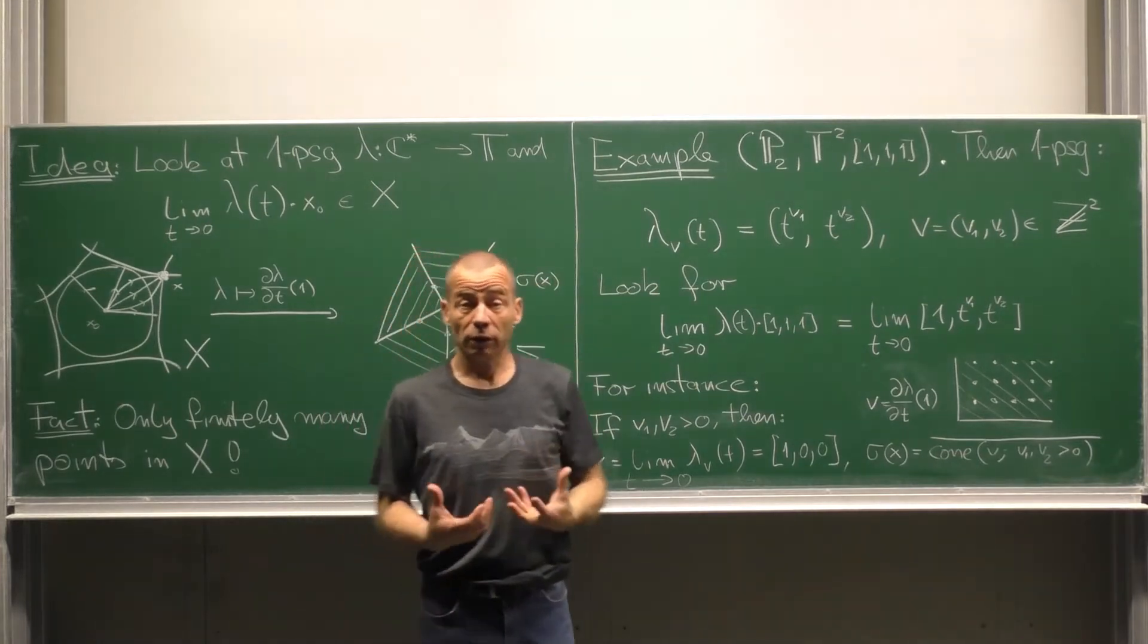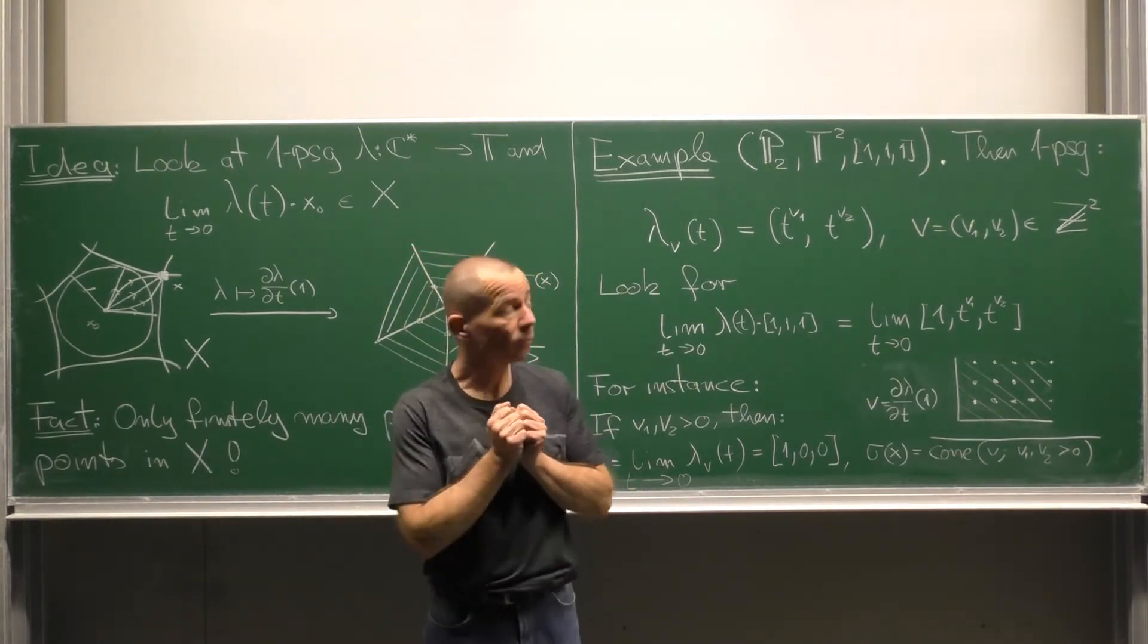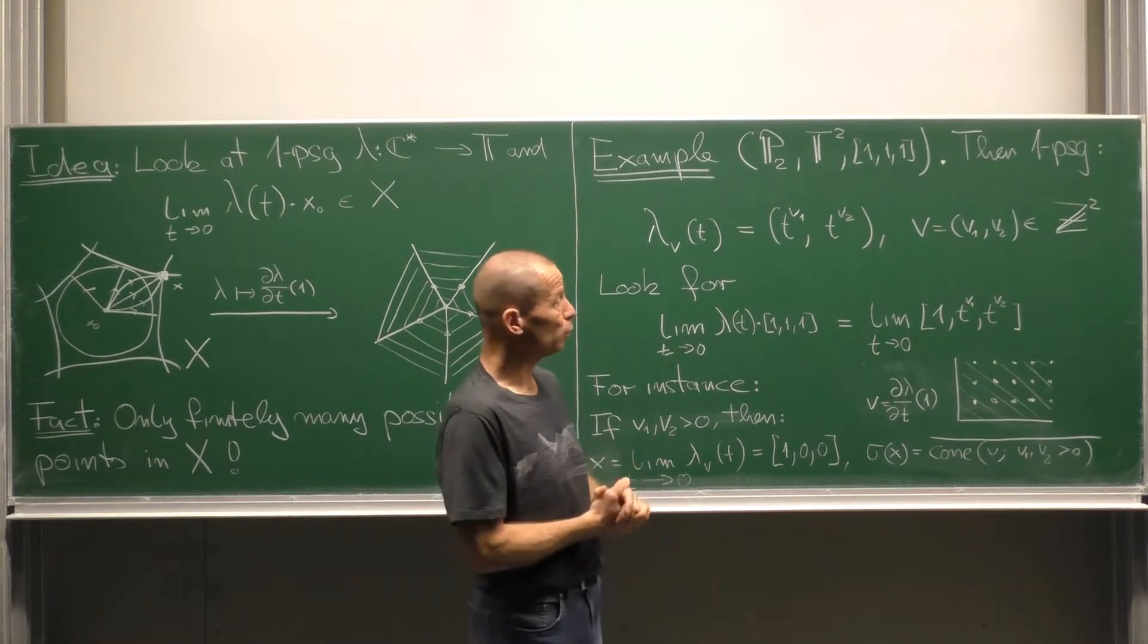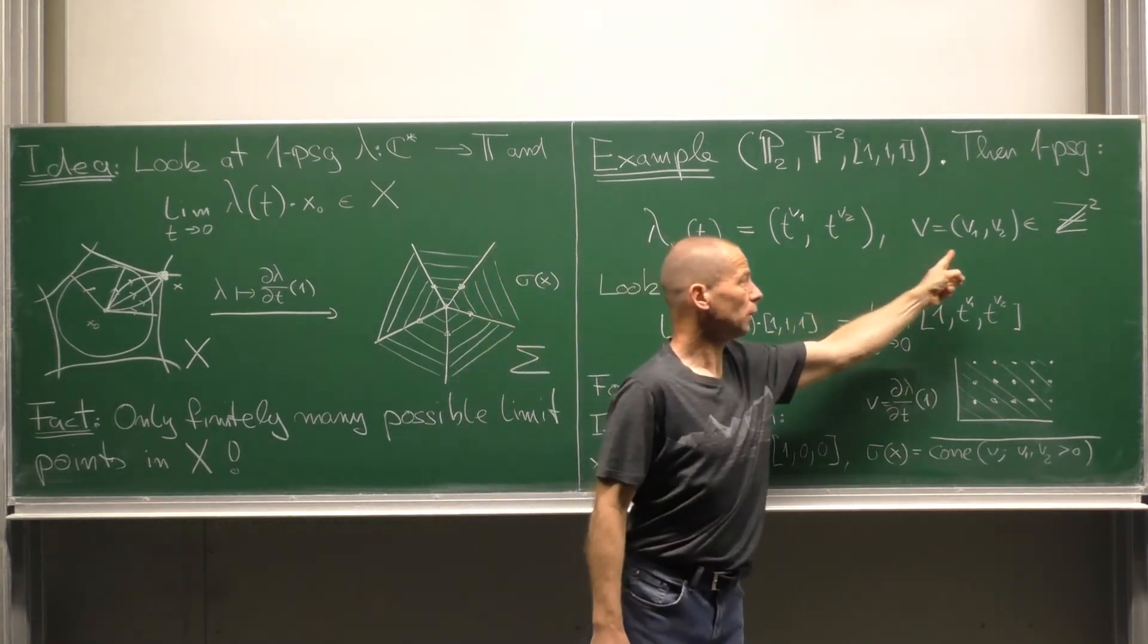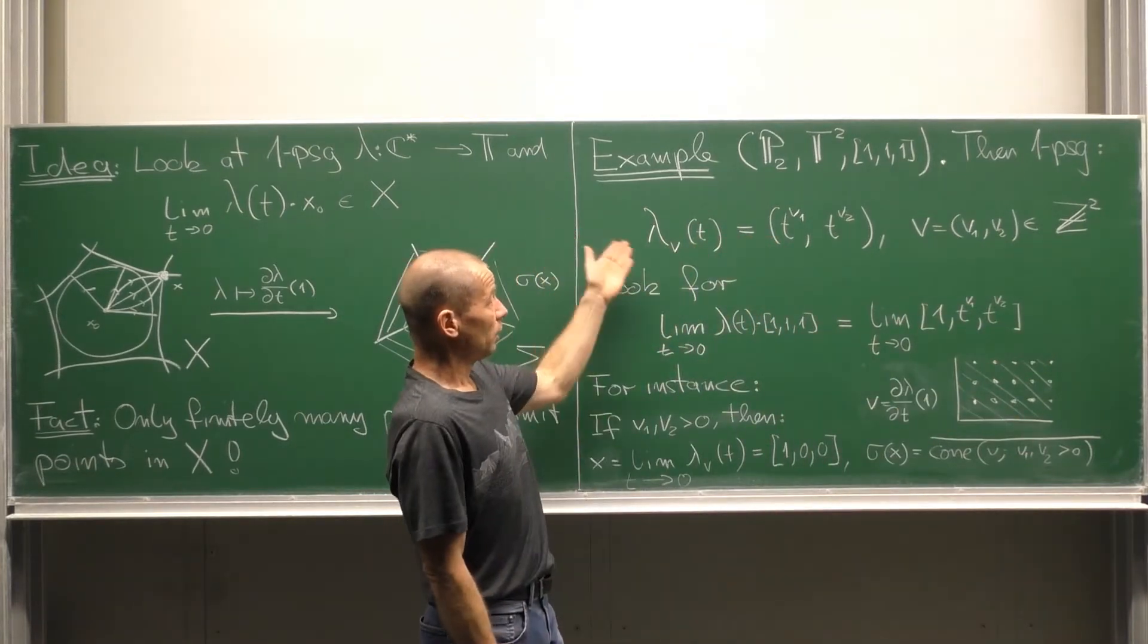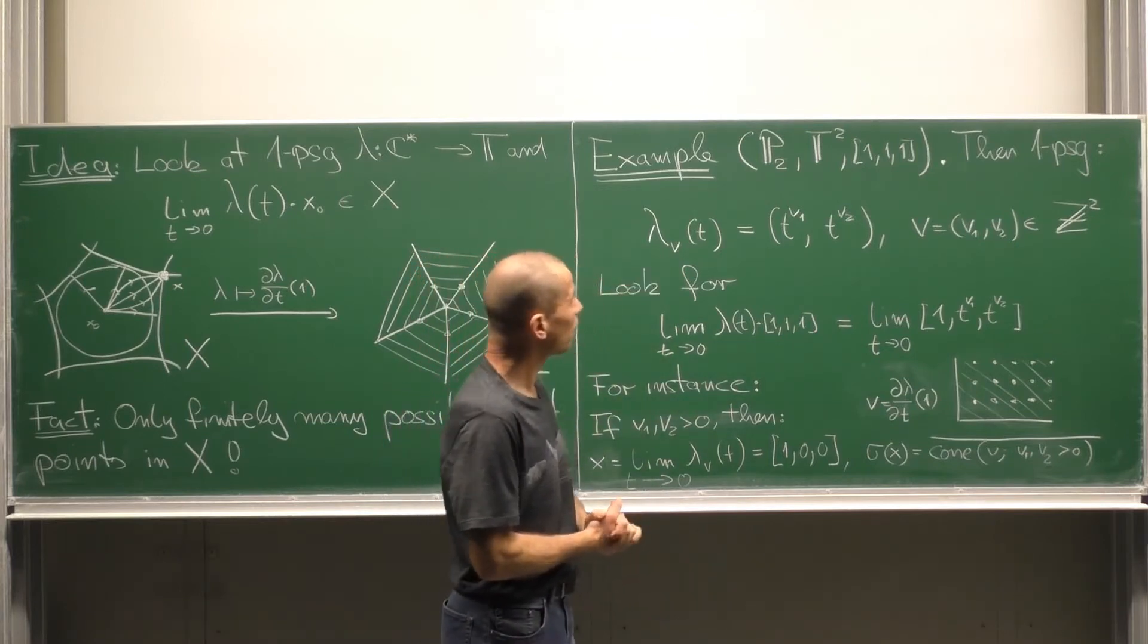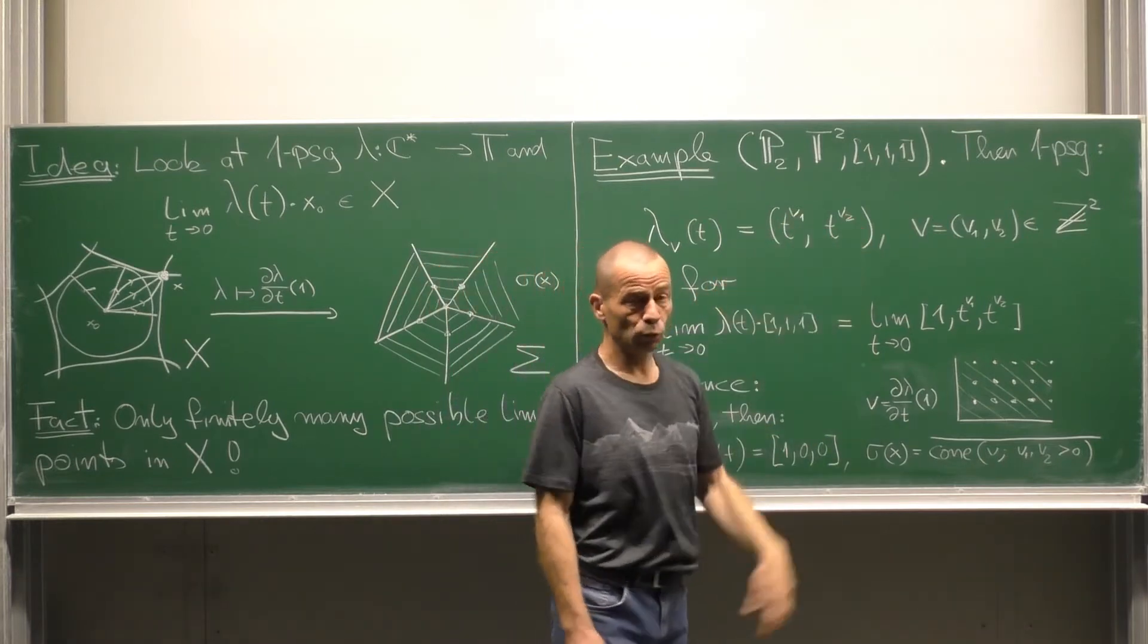Consider the projective plane with its standard torus structure. In this situation we have the two torus and the one parameter subgroups of the two torus of the following form. Take vector V equal V1 V2 from Z2. Then the associated one parameter subgroup lambda V of T is T to the V1 T to the V2.